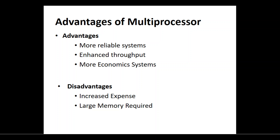The main advantages of a multiprocessor system are increased reliability — if one processor fails, other processors take its load. It enhances throughput, meaning output and services increase. It is also more economical. The disadvantages include increased expense and large memory requirements, since multiple processors demand more memory.